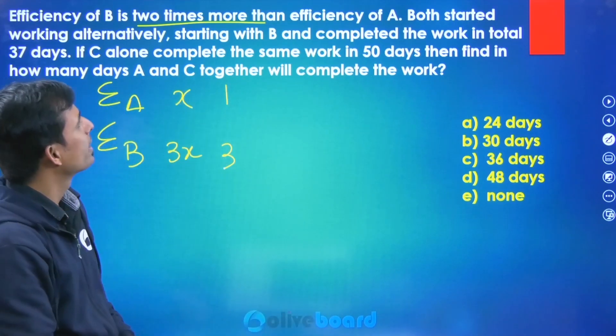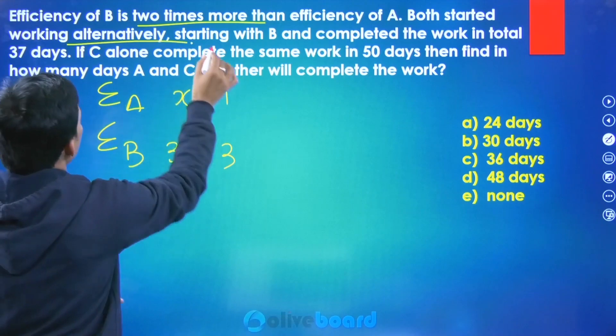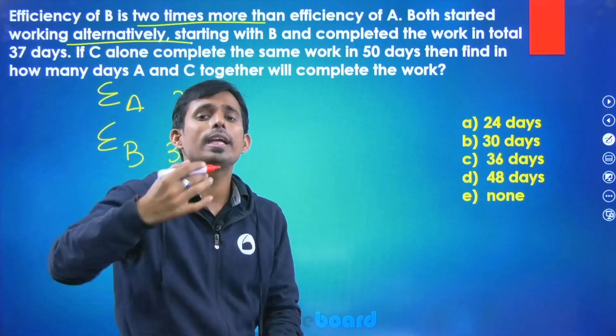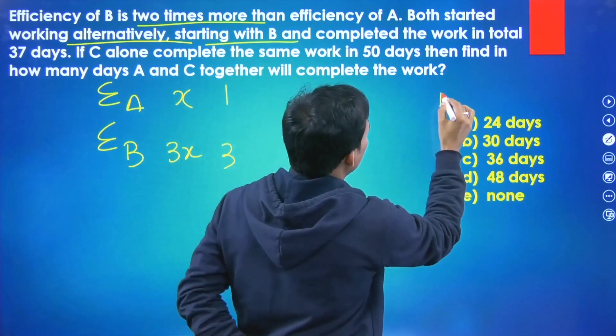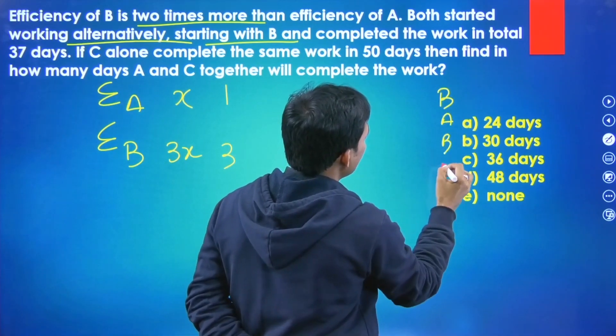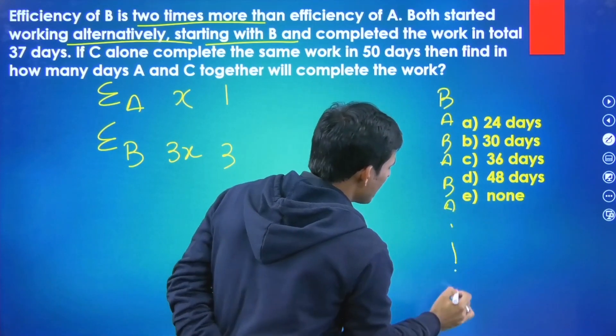Now next is they work alternatively. This is very important, alternatively but starting with B. Means who will come to work first day? B, A, then B, A, then B, A. So this is the cycle, this is the cycle, okay.